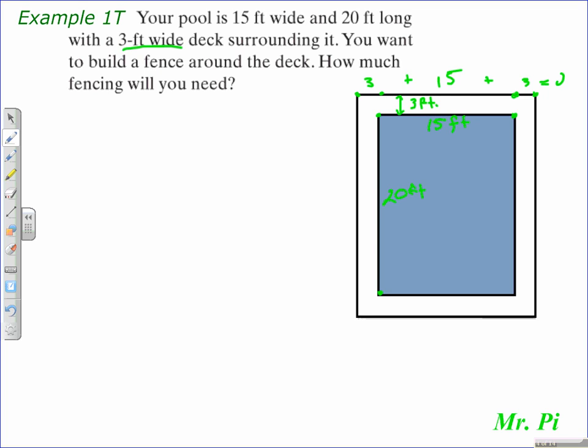You think of the length in a similar manner, that from this corner to this corner is 3 feet, and from this corner down here to this corner down here is 3 feet, and the section in the middle measures 20 feet. So we add those together to find the length of the fencing: 20 plus 3 plus 3 gives 26 feet.